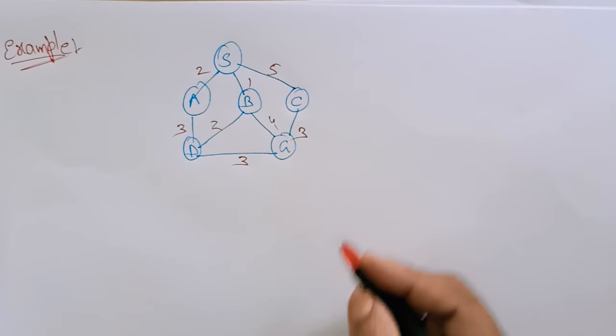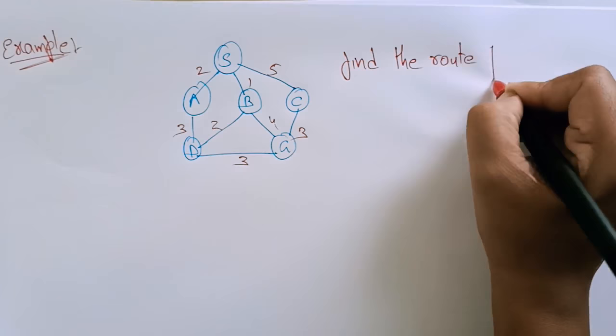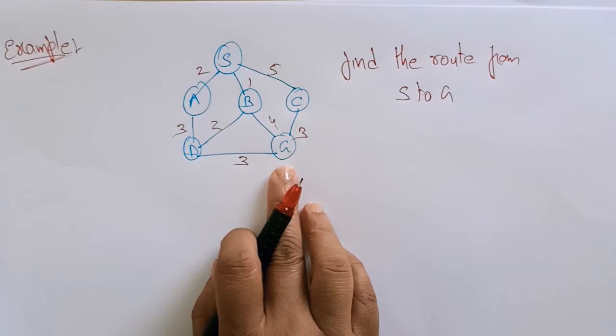The problem is: find the route from S to G. From the root node to the G node, I have to reach from S to G using breadth first search.